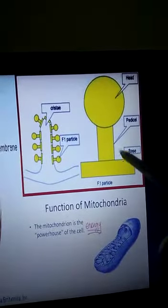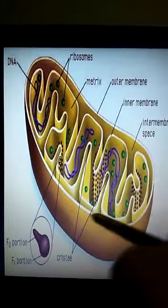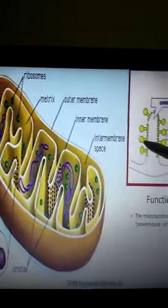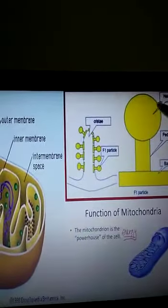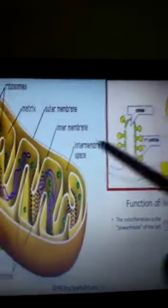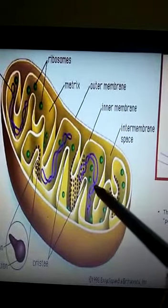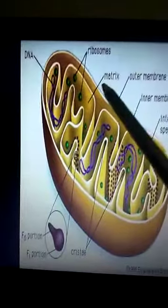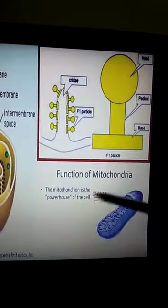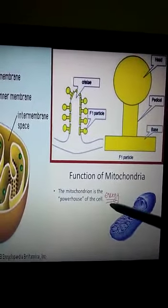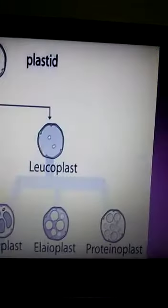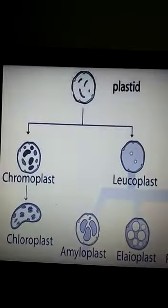This circular structure is known as the F0 particle, and the complete length including the base and the pedicle or stalk is known as the F1 particle. So the mitochondria outer membrane is continuous, but the inner membrane has many finger-like projections known as criste or oxysome, which are further divided into F0 and F1 particles. The DNA present in the mitochondria and its own ribosomes are why it is known as the semi-autonomous organelle. The main function of mitochondria is to make ATP or energy for the cell, which is why it is called the powerhouse of the cell.